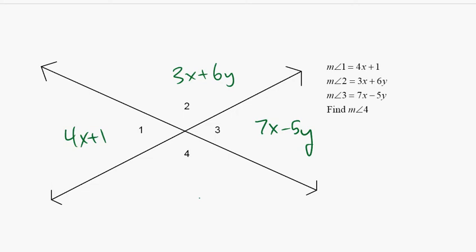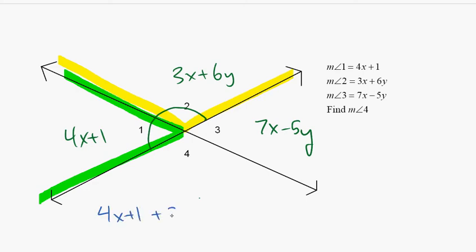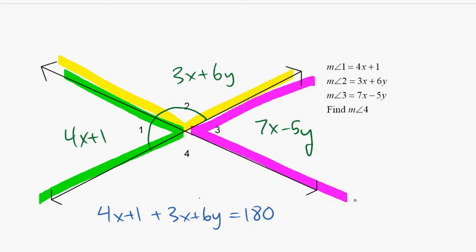So the two things that we know is that a straight angle equals 180 degrees. So this green angle and this yellow angle formed to make a straight angle. So I'm going to say 4x plus 1 plus 3x plus 6y equals 180 degrees. That's one of my equations. Now this yellow one and this purple one also make a straight angle. So that's my second equation.